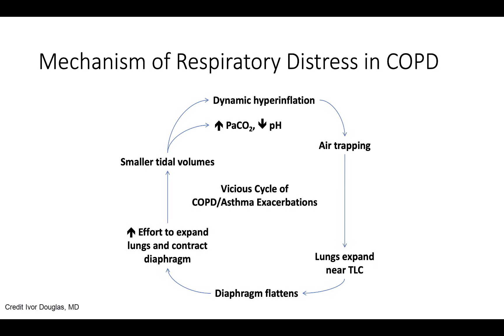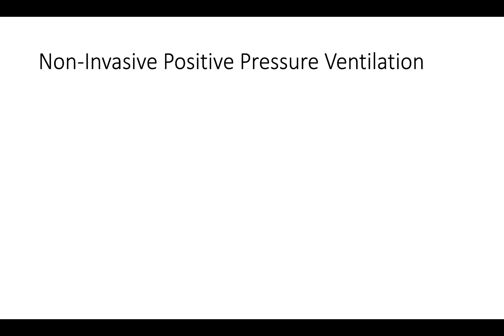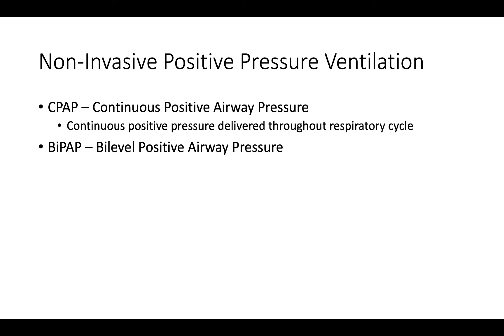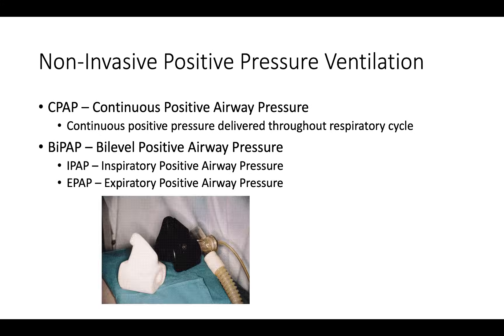So, how do we break the vicious cycle of a COPD or asthma exacerbation? Non-invasive positive pressure ventilation includes both CPAP and BiPAP. BiPAP is actually a brand name; the general term is Bi-Level Positive Airway Pressure. In CPAP, a continuous positive pressure is delivered throughout the entirety of the respiratory cycle — for example, 5 cm of water. In BiPAP, both an inspiratory pressure (the IPAP) and an expiratory pressure (the EPAP) are set. Shown here are images of non-invasive ventilation from 1995 and a current image showing face masks used today.